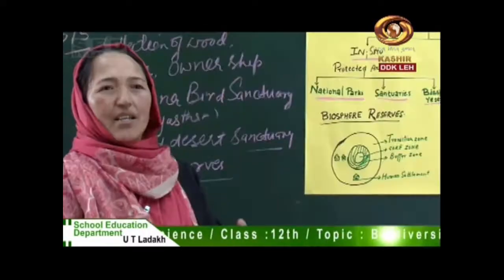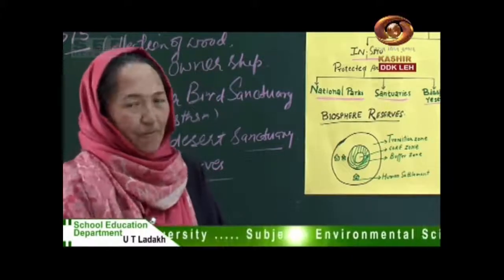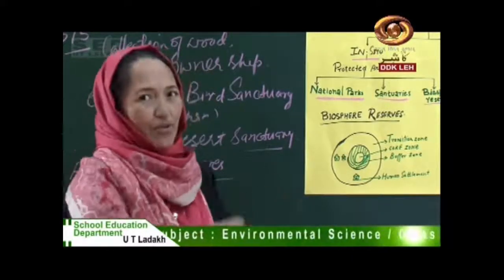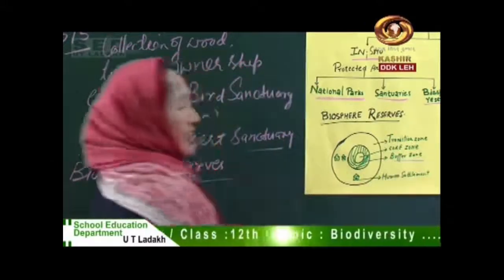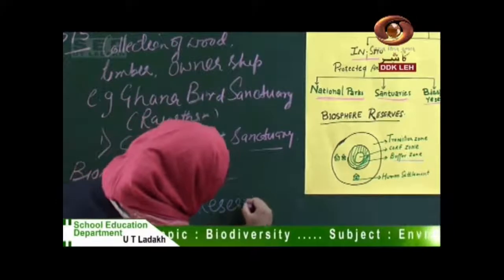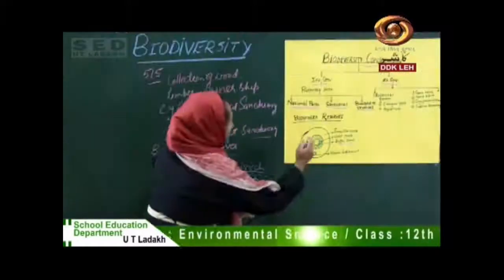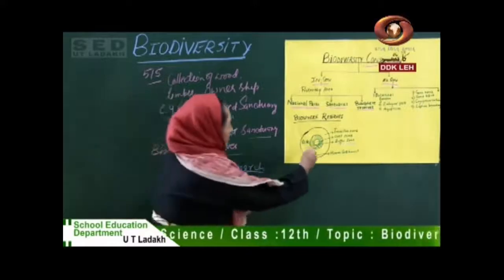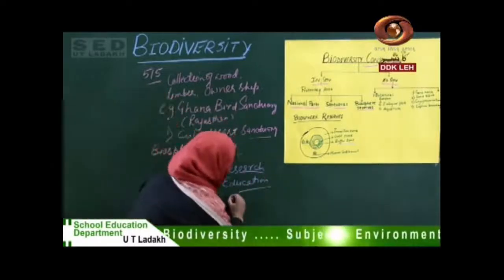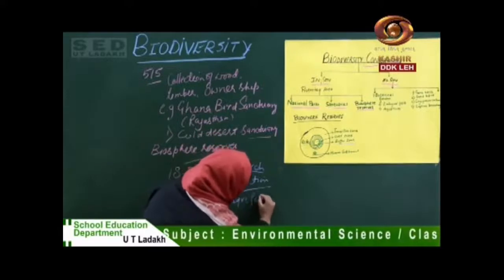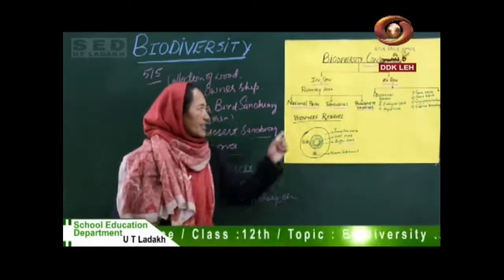The core zone is a fully protected zone where no activities are allowed. The buffer zone allows relaxation for research walks and education activities. The transitional zone is where human settlement exists — you can do agriculture, fisheries, and other human activities in the transitional zone.